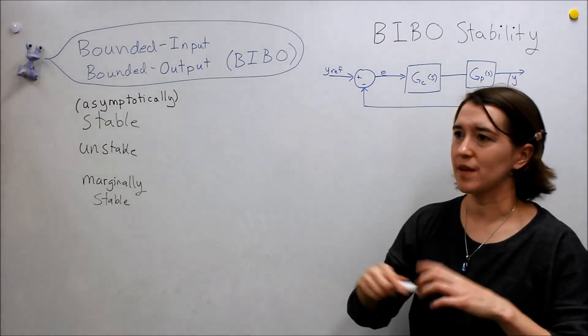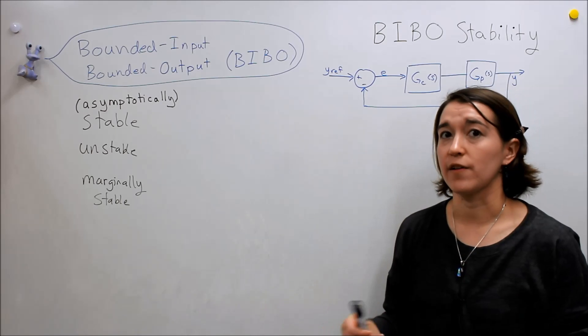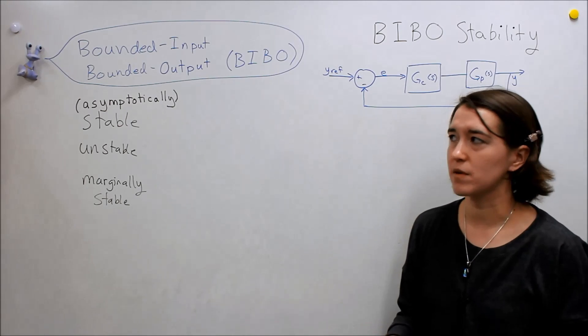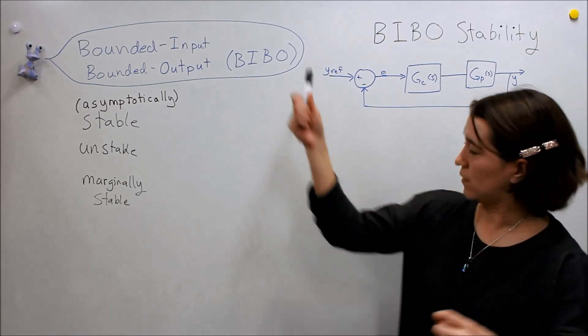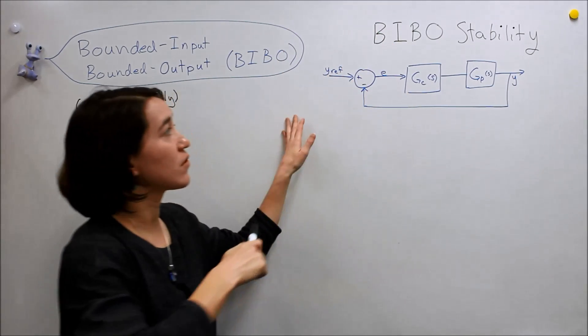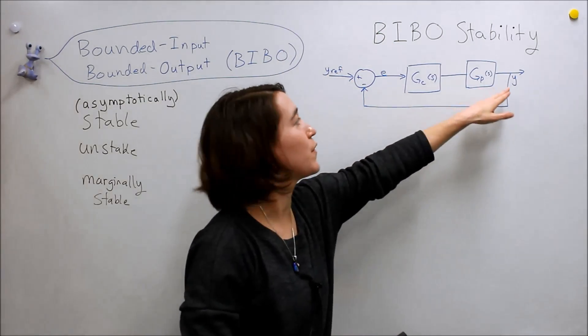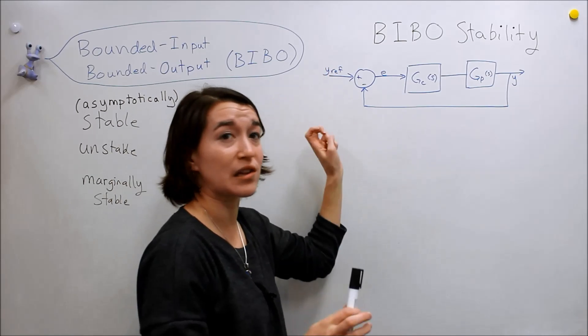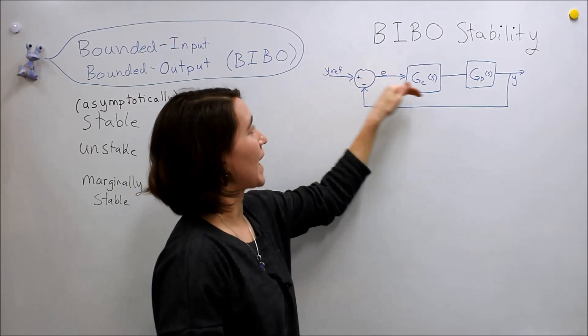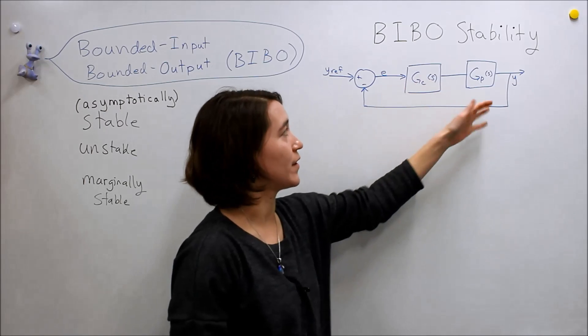And this is the stability we're going to look at for closed loop systems. And remember, now we're working with closed loops, so we have a plant system and we're feeding something back. We're closing this loop and feeding it back through a controller, eventually, to the system.